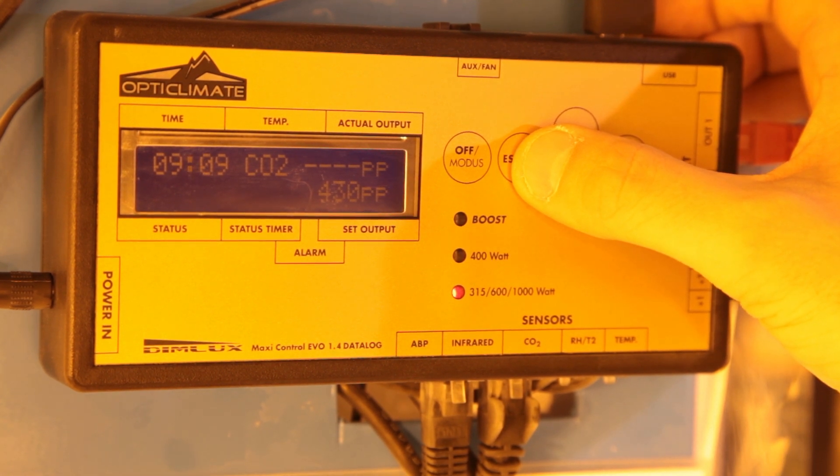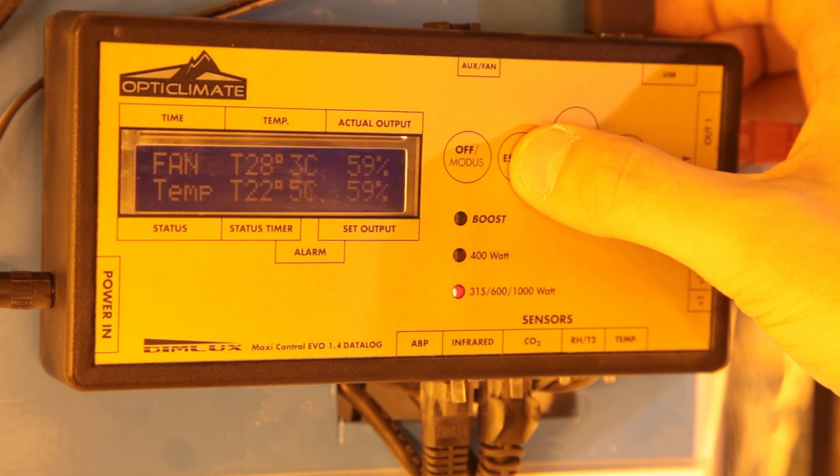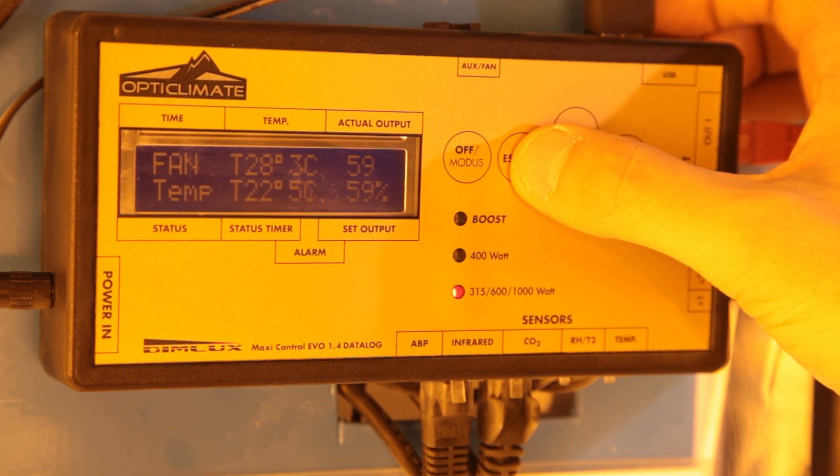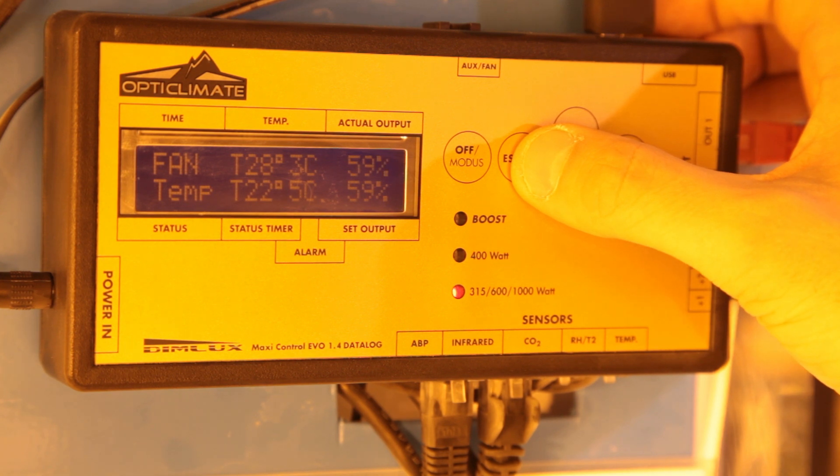The next screen is for the aux box stroke fan controller. That's a separate piece of equipment that allows you to switch other items of grow room equipment on and off and control fan output rates. It shows you the current temperature and fan speed. The next screen shows VPD levels.